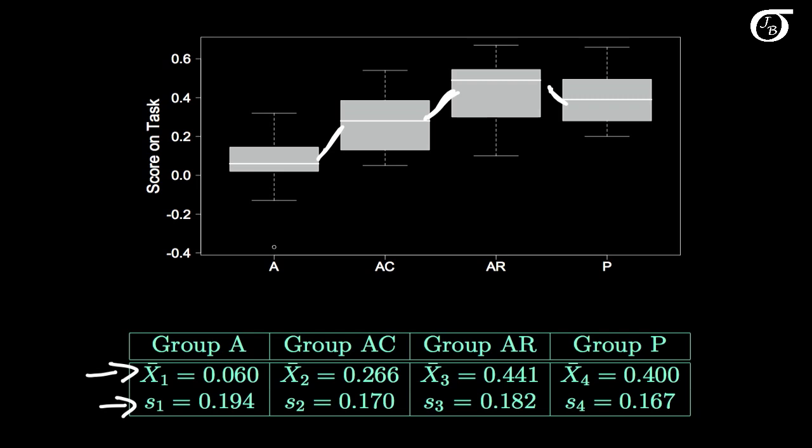The standard deviations are important for us because one way analysis of variance assumes that the population variances of the different groups are equal. If we look at the numbers down here we see that the sample standard deviations are different, as they're going to be, but they're pretty darn close. And visually it certainly looks like the variability within each group is pretty similar.